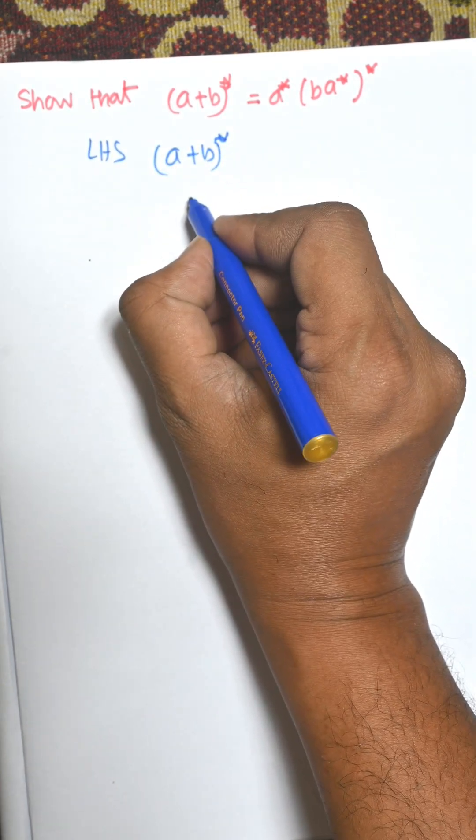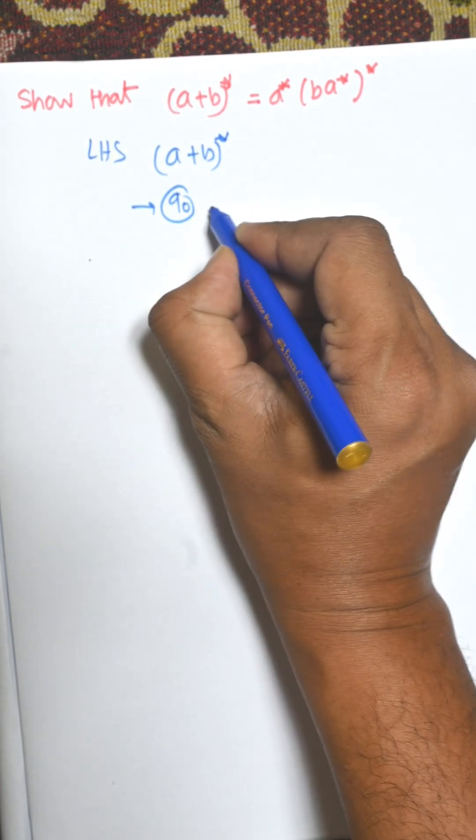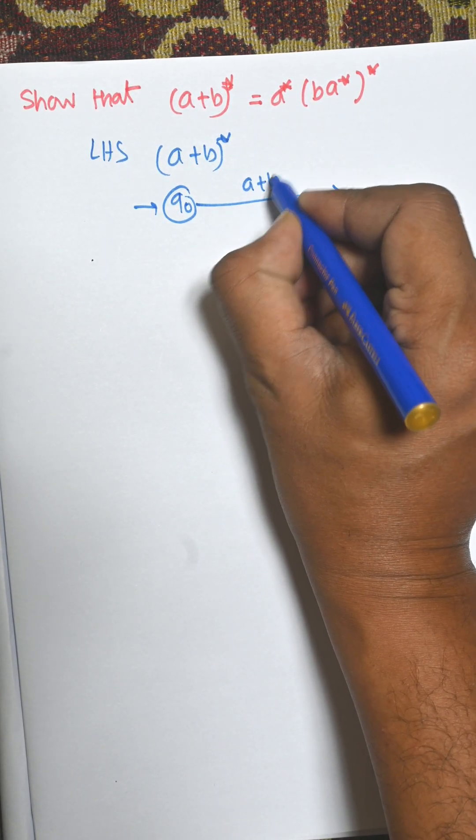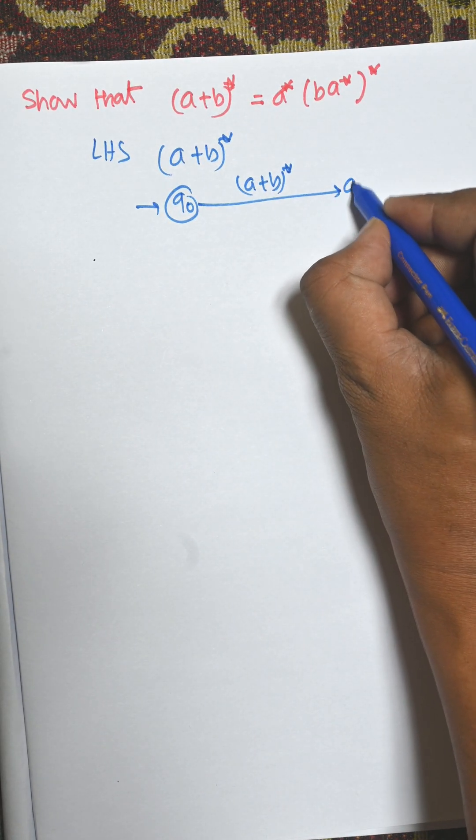We know for (a+b)* that is equal to, there is a q0 initial state and consider this one as an input. As an input we will get final state.